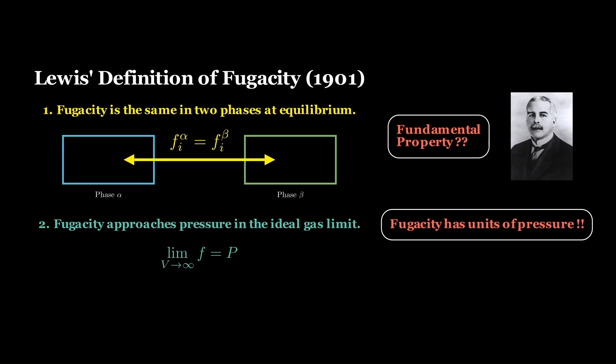Lewis was clear that fugacity has the same units as pressure, but it carries more physical meaning in non-ideal conditions. He likely believed fugacity was a fundamental property of substances. However, as we'll soon see, tethering it to pressure can keep it from truly generalizing.